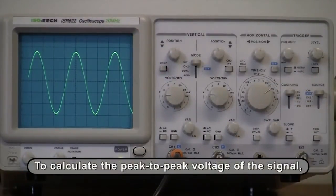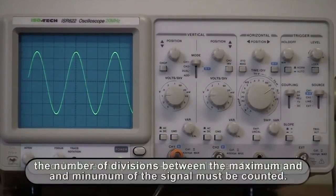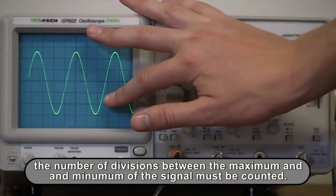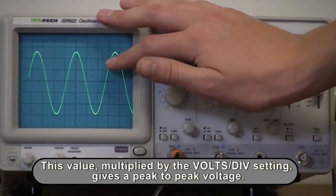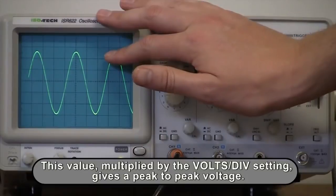To calculate the peak-to-peak voltage of the signal, the number of divisions between the maximum and minimum of the signal must be counted. This value multiplied by the volts per division setting gives a peak-to-peak voltage.